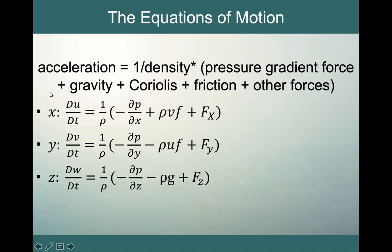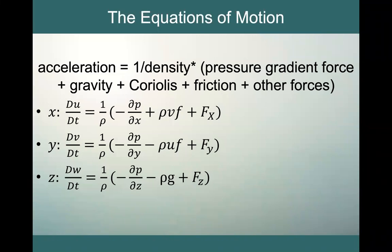Bringing all these ideas together, we have three equations of motion for X, Y, and Z. In the X direction, we have the pressure gradient force, plus the Coriolis force, plus other forces including friction. In the Y direction, we also have the pressure gradient force, the Coriolis force, and other forces including friction. In the Z direction, we have the pressure gradient force, the force due to gravity, and friction and other forces. Those are the equations of motion in their simplest form. We will look at these in more detail later. The next important idea we'll get into is continuity.